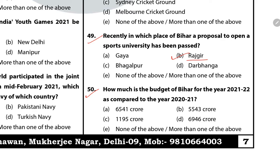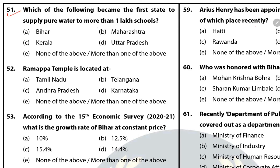Question 50: How much is the budget of Bihar for the year 2021-22 as compared to 2020-21? The answer is A — 6,54,1 crore. Question 51: Which of the following became the first state to supply pure water to more than one lakh schools? The answer is D — Uttar Pradesh. Bihar has provided water to about 99% of its schools, while Uttar Pradesh became the first state to start tap water supply in more than one lakh schools.